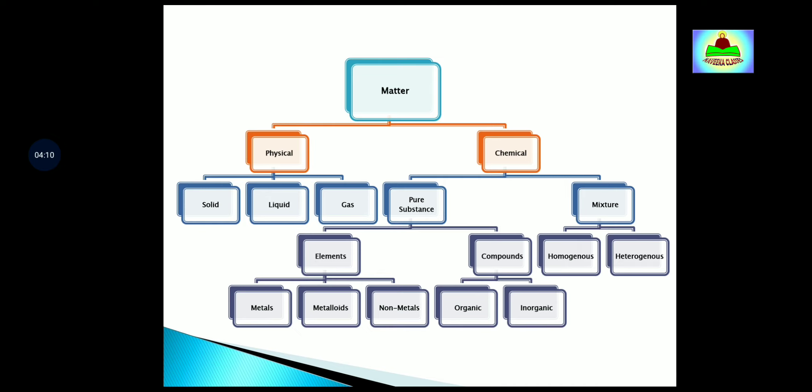Now next is heterogeneous mixture. In heterogeneous mixtures, the composition is not uniform throughout and sometimes different components are visible. Example we take is mixture of salt and sugar, and many other pulses along with some dirt.